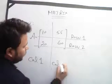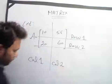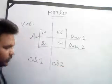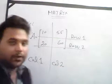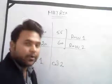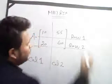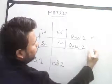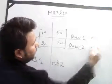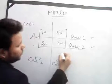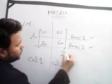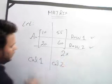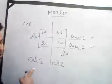10 and 55 is row one, 20 and 60 is row two. 10 and 20 is column one, 55 and 60 is column two. So the order of this matrix is two cross two.